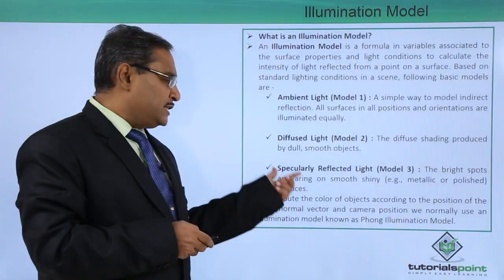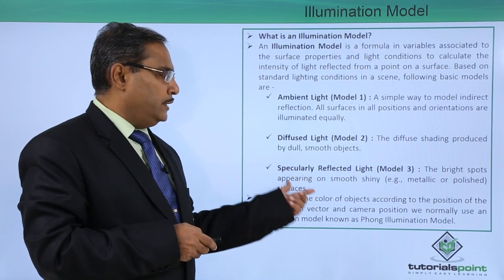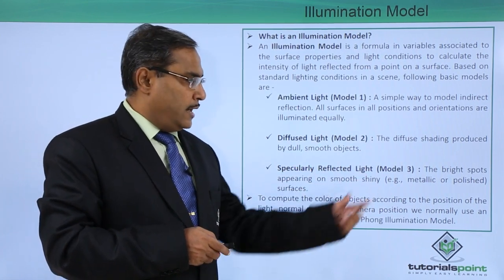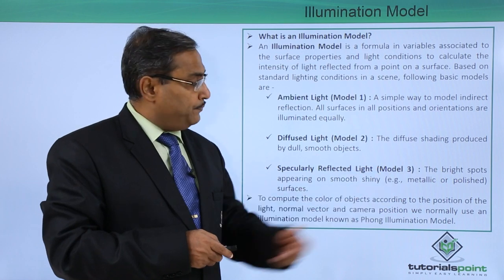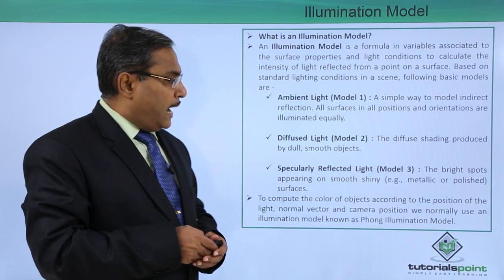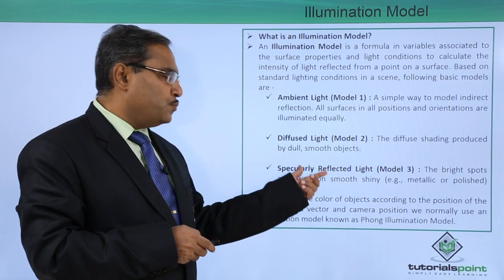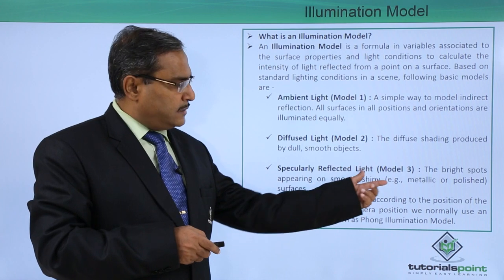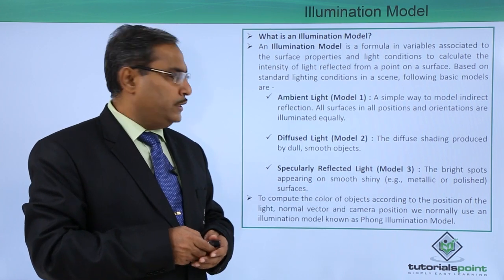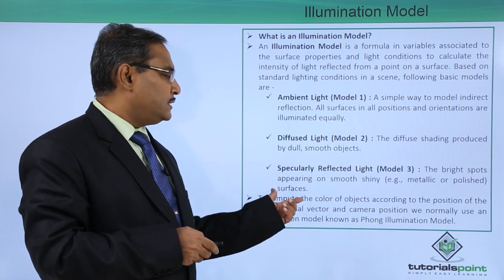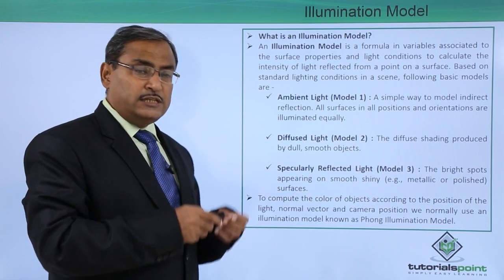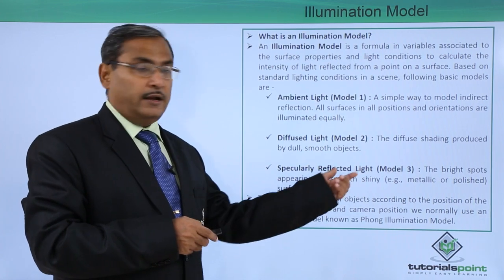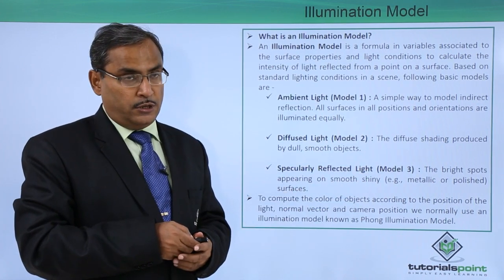The next model is specularly reflected light, model number 3. This refers to the bright spots appearing on smooth, shiny surfaces — for example, metallic or polished surfaces.